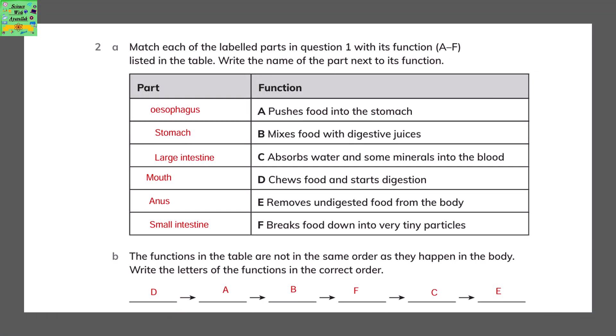Each of the parts of the digestive system is written next to its function. The esophagus pushes food into the stomach. Stomach mixes food with the digestive juices. Large intestine absorbs water and some minerals into the blood. Mouth chews food and starts digestion. Anus removes undigested food from the body.